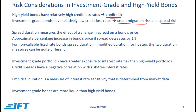Spread risk is the risk that the spread of a bond over the risk-free rate might go up, or a bond might be downgraded, because of which the spread relative to a government bond goes up. Spread duration is an important measure when we are concerned with spread risk. This measures the effect of a change in spread on a bond's price.